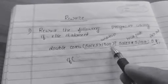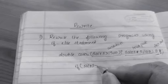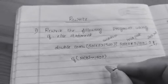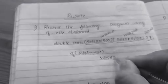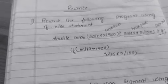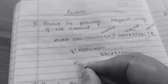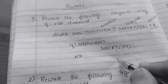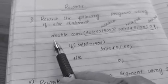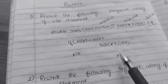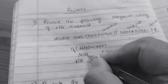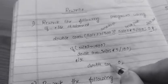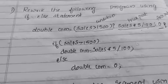Converting to if-else: if (sales > 1500), this is the condition. If this condition is true, the true case is executed: double commission = sales * 5 / 100; — don't forget the semicolon. Else, which is the false case: double commission = 0; So we declare the variable of double type and store the true case or false case value accordingly. This is the way of converting a ternary operator statement to an if-else statement.